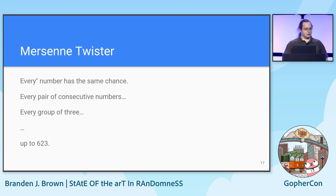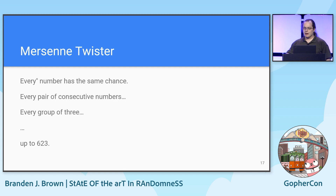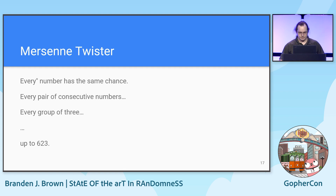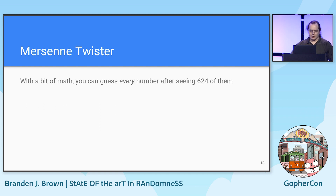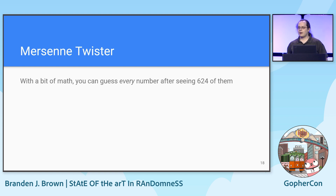In its most popular configuration, not only is every number uniform, so is every pair of numbers, every group of three, and so on, all the way up to groups of 623 numbers. Most groups of 624 numbers never appear in the sequence. And in fact, once you see 624 numbers, you can do a bit of straightforward math and figure out the internal state of Mersenne Twister.